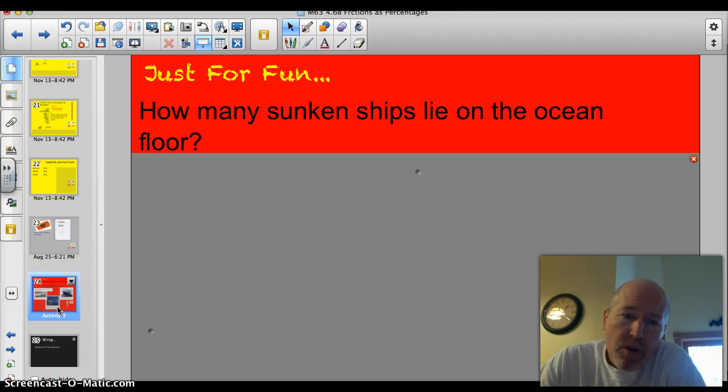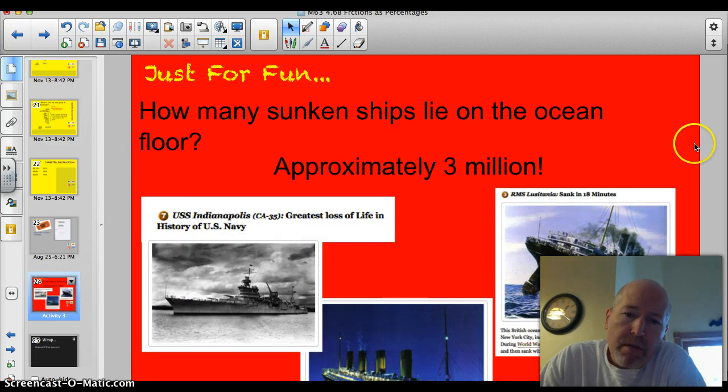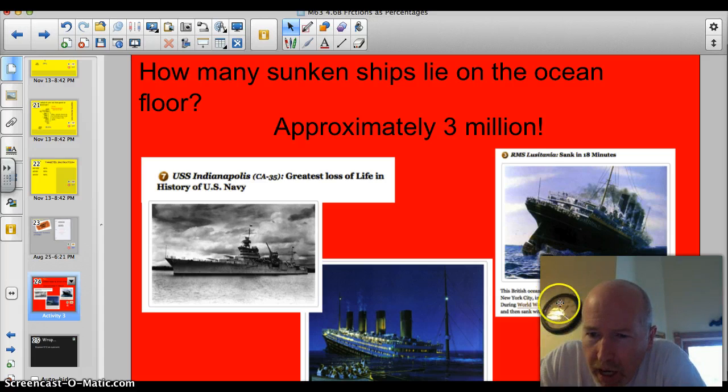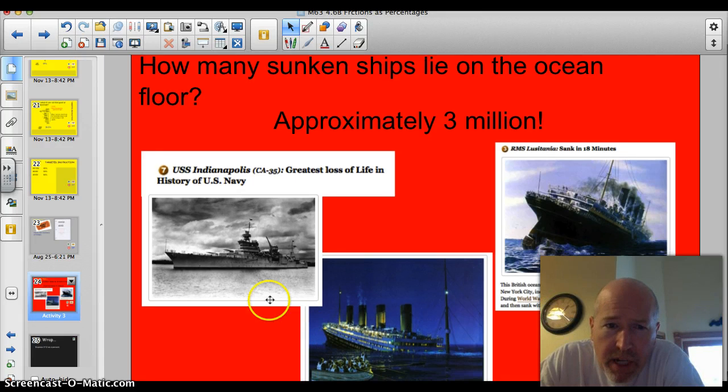How many sunken ships lie on the ocean floor? I was kind of surprised. Approximately 3 million. 3 million. Why can't I just find one? Or better yet, just find a treasure chest of gold coins that I see in the movies. You know what I'm saying? All right, I just put a couple of famous ones down. Here's the Lusitania. This was sunk in 18 minutes in 1915. 18 minutes. That's not long on a ship that size. Here's the Titanic, of course. And then I thought I'd put this one in USS Indianapolis, which was the largest loss of life in naval history when that was sunk.